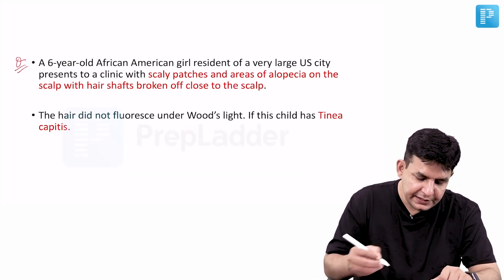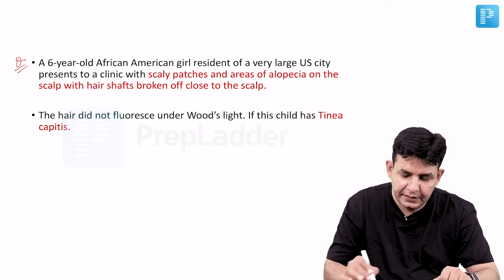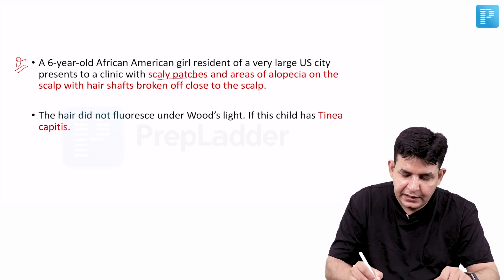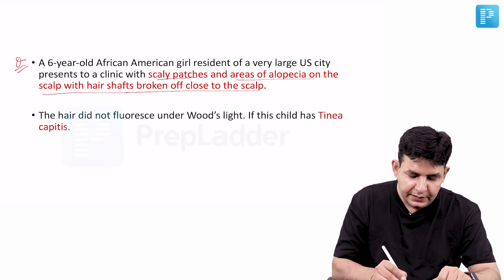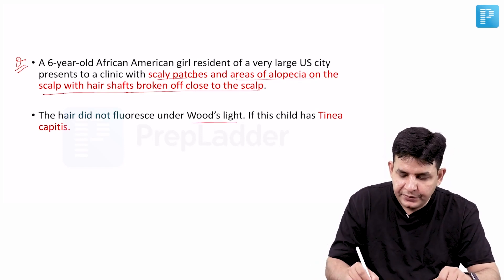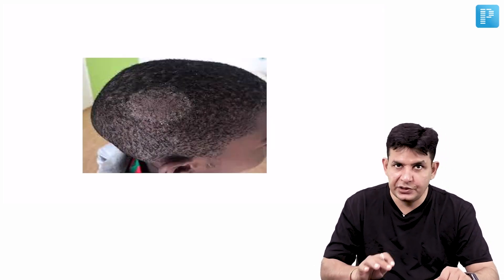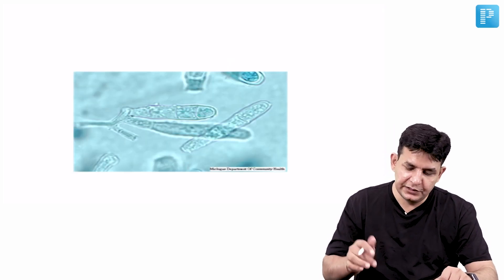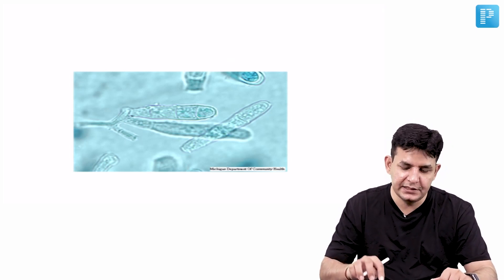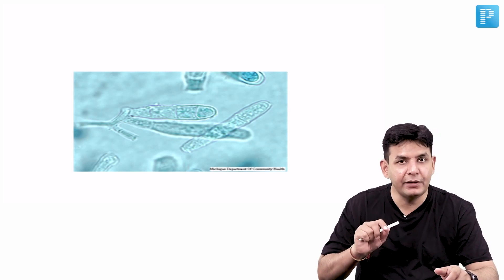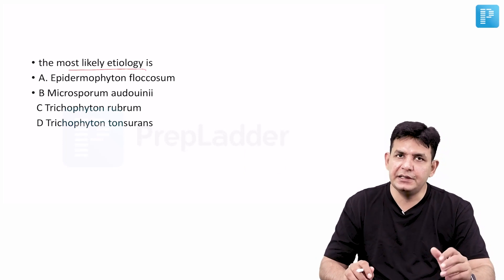Coming to the second question in mycology: a 6-year-old African-American girl, resident of a large US city, presents to clinic with scaly patches, areas of alopecia on the scalp with hair shafts broken close to the scalp. The hair does not fluoresce under Wood's lamp. If this child has tinea capitis — this is the picture of tinea capitis, and this is the picture of the organism. You need to remember the cylindrical macroconidia of Trichophyton. The question asks for the most likely etiology.